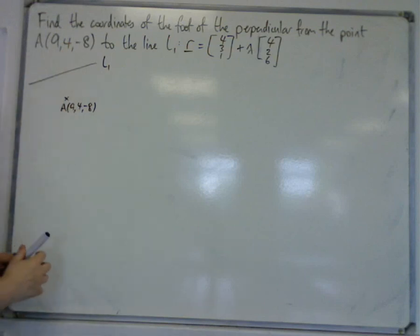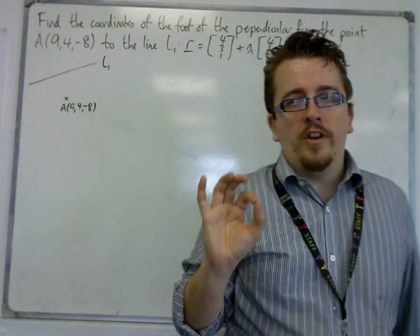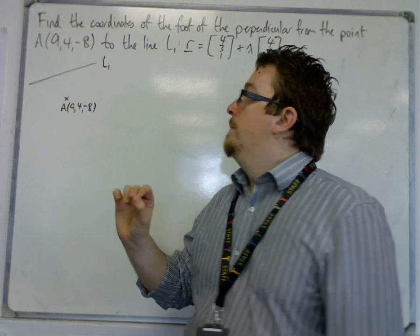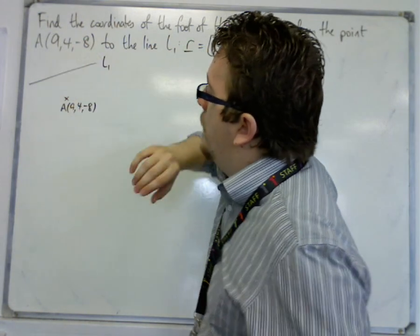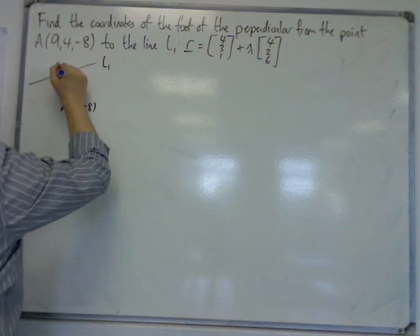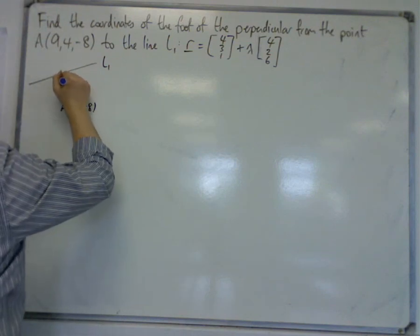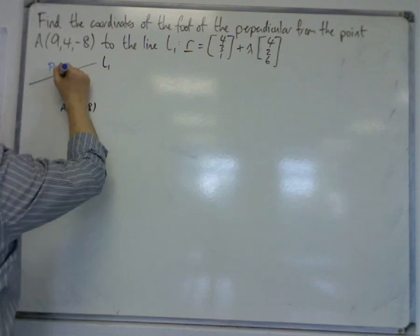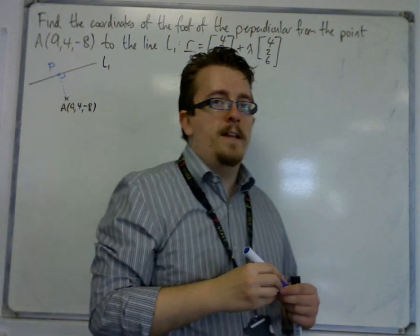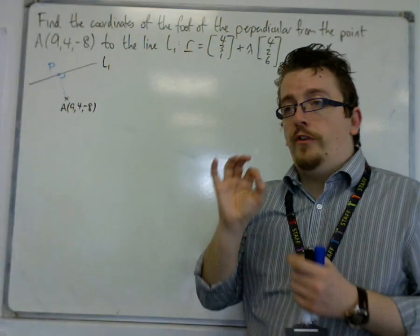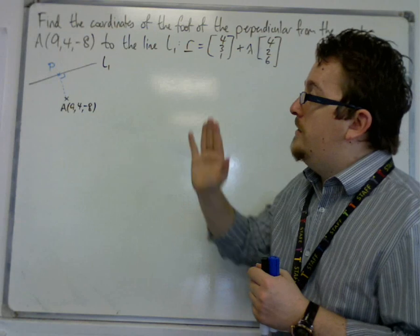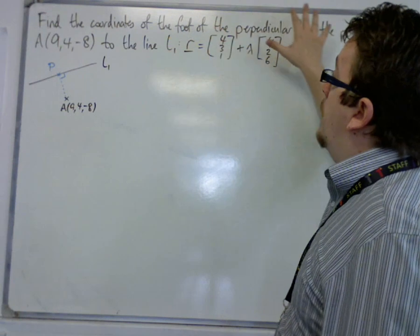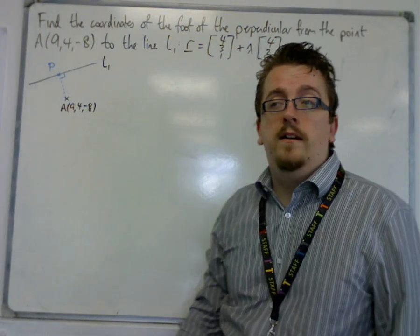Then the foot of the perpendicular is the coordinates of the point on the line that is of shortest distance. So the shortest distance from A to the line will be a point, say here. Let's call this point P, such that that line will make a right angle. So that is the shortest distance from A to P, which will make that right angle, and P is the foot of the perpendicular in this case.